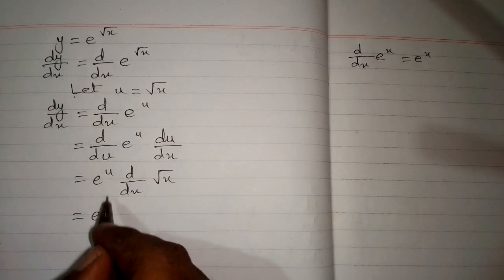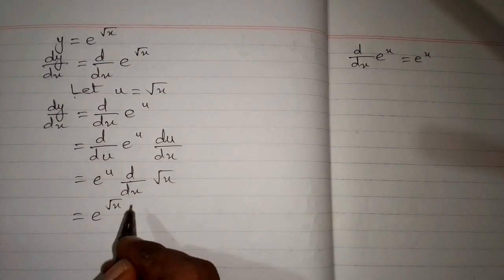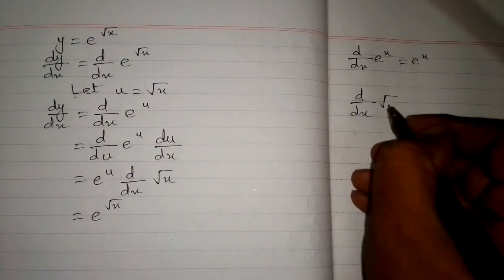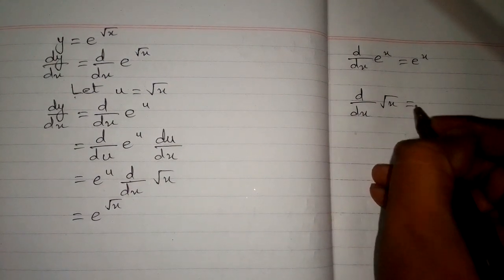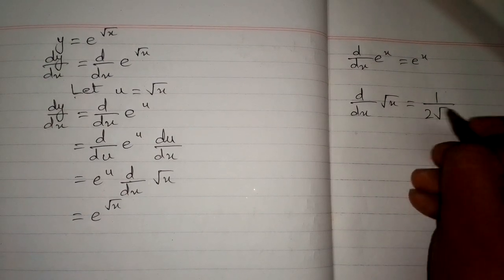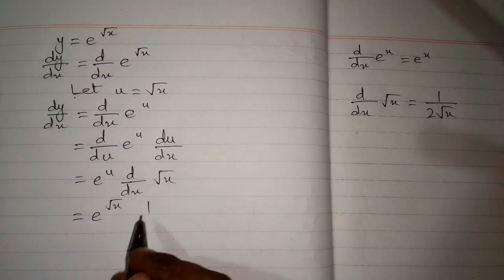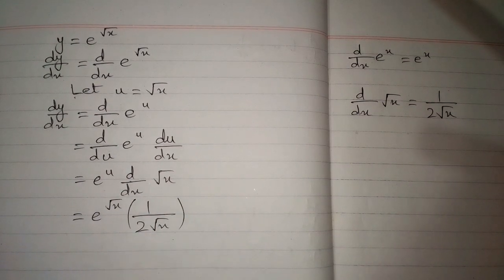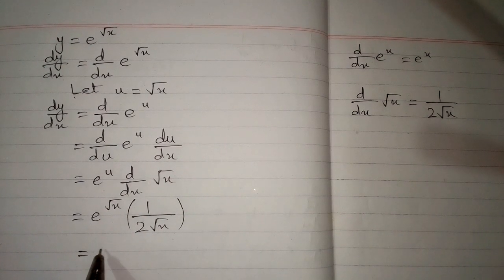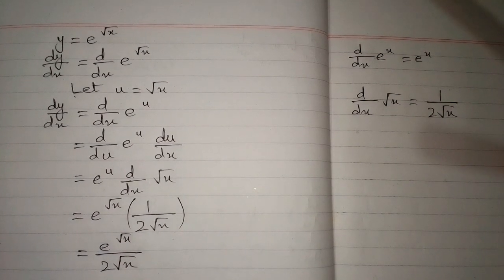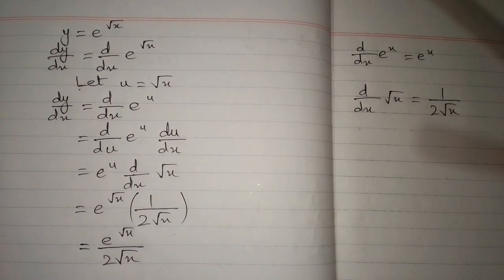Now we substitute back u = square root of x. We know that the derivative of square root of x is 1 upon 2 square root of x. So the result is e to the power square root of x upon 2 square root of x, and this is the required answer.